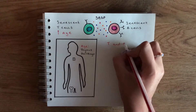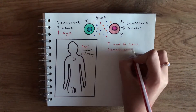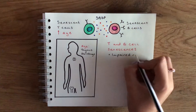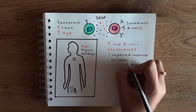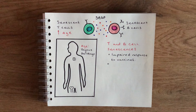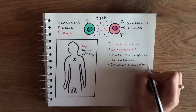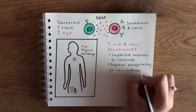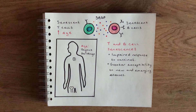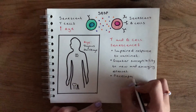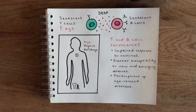Due to B and T cell senescence, older individuals tend to have an impaired responsiveness to vaccinations because they can't mount strong enough immune responses. They also have a greater susceptibility to new and emerging infectious diseases because their naive B and T cell pools are highly depleted, and they also tend to develop various age-related diseases such as type 2 diabetes and cancer.